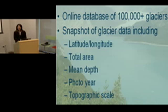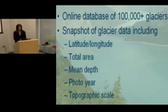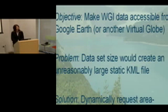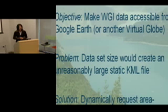The second dataset is our World Glacier Inventory. While the glacier photos are actual photographs, this is more raw data and statistics about glaciers. This collection has over 100,000 glaciers and it's a snapshot in time — we have information such as the latitude and longitude, the total area, the mean depth, and so on. Our objective was to make this information accessible through Google Earth. With the glacier photograph collection we have static KML files, but the World Glacier Inventory was just too large — over 100,000 records would create a KML file thousands of pages long that would probably crash Google Earth.